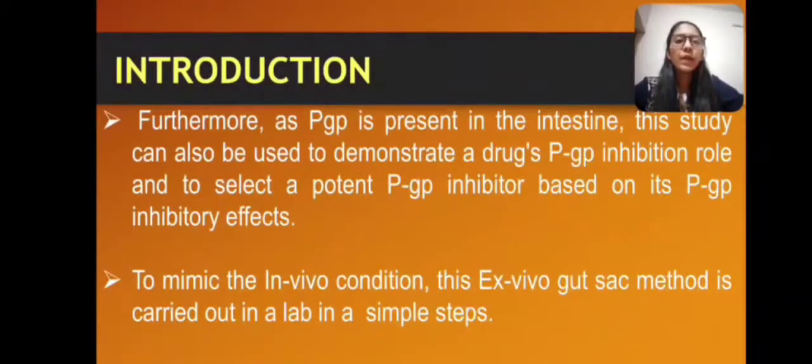This study can also be done by in-vivo method, but in-vivo method requires the whole animal and institutional animal ethics committee approval. To mimic the in-vivo condition, the ex-vivo gut sac method uses only a part of the animal, that is only the intestine, to carry out the experiment in a lab in very simple steps.